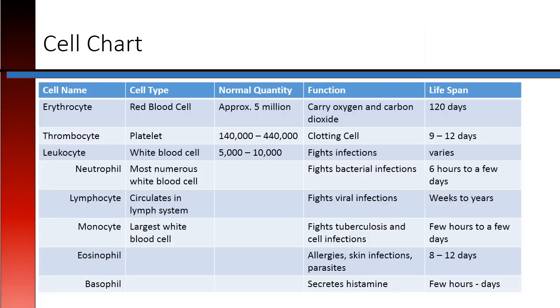This is a chart for easy reference describing the different types of cells, the normal quantity, the function, and the lifespan. You may print this off for easy reference.